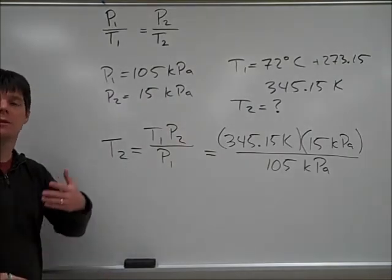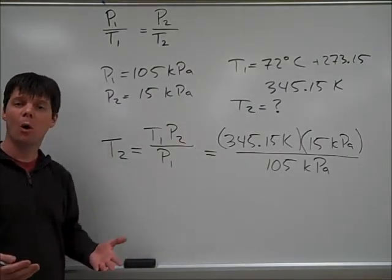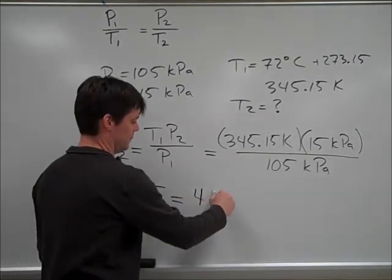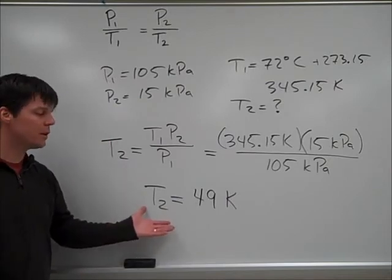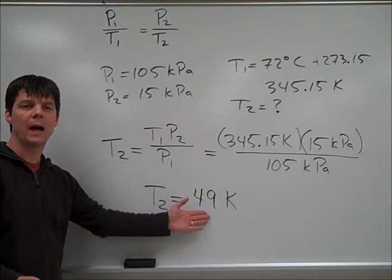Our last step is to solve and then evaluate our answer for both, is it an appropriate answer, does it have the correct number of significant digits. We've solved to find an answer that our final temperature, or T2, will be equal to 49 Kelvin.